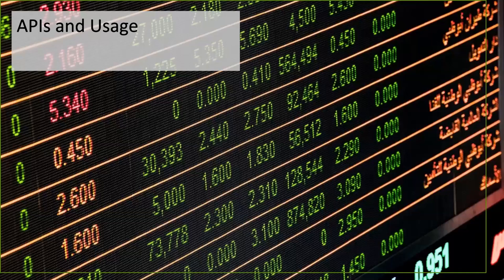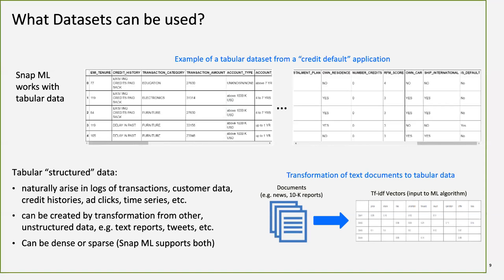That's a quick overview of Snap ML and SnapBoost. Now let's look at how to actually use Snap ML in machine learning code. Snap ML, like XGBoost and linear regression models, works with tabular data — you have your target column and your feature columns. Importantly, the dataset can be dense or sparse. Snap ML is optimized for sparse datasets, which scikit-learn handles poorly.